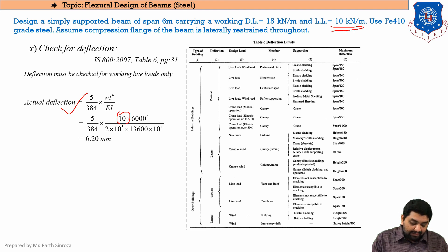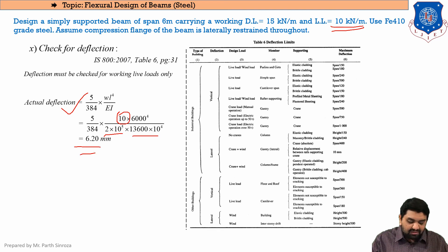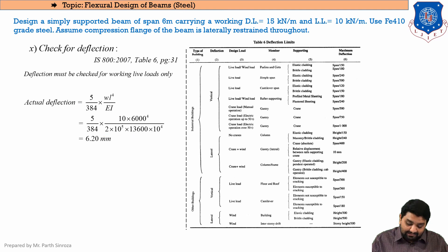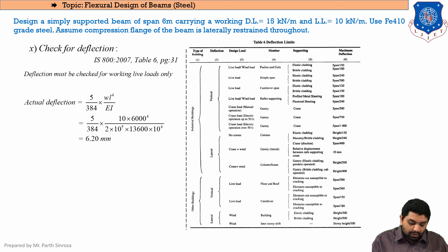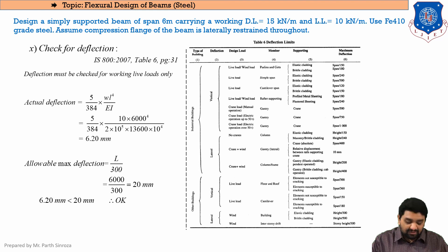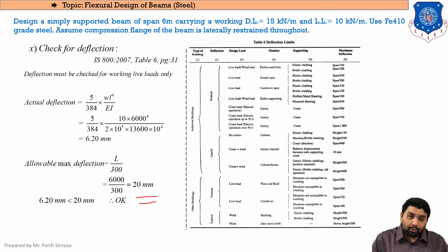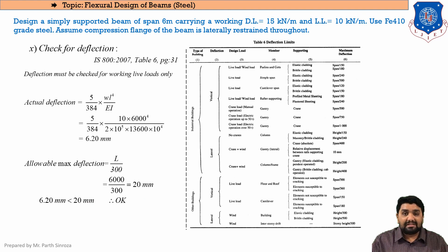The allowable maximum deflection = L/300 = 6000/300 = 20 mm. The actual deflection of 6.20 mm is less than 20 mm, so the deflection check is satisfied — the section will not fail under deflection.